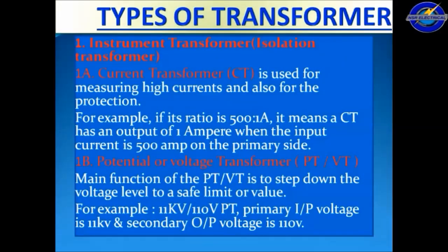Instrument transformers, also called isolation transformers. A current transformer (CT) is used for measuring high currents and also for protection purposes. For example, if the CT ratio is 500:1 A, it means the CT has an output of 1 ampere when the input current is 500 amps on the primary side.